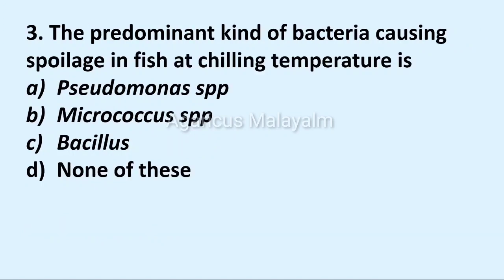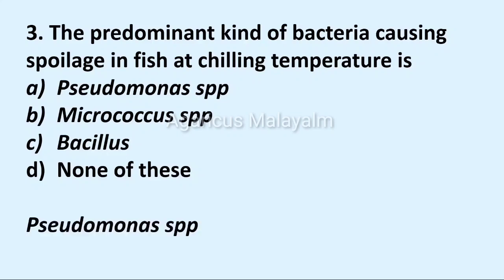Third question: the predominant kind of bacteria causing spoilage in fish at chilling temperatures. Option A: Pseudomonas species. Option B: Micrococcus species. Option C: Bacillus. Option D: none of these. Correct answer: Option A, Pseudomonas species.